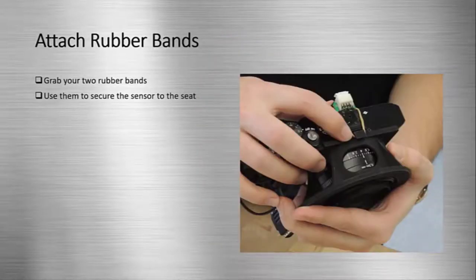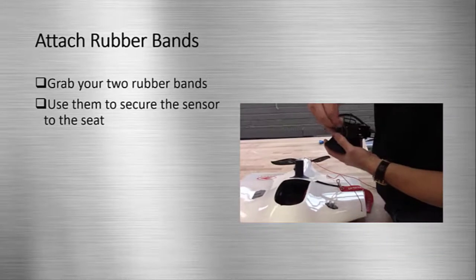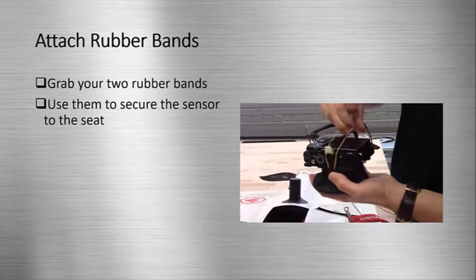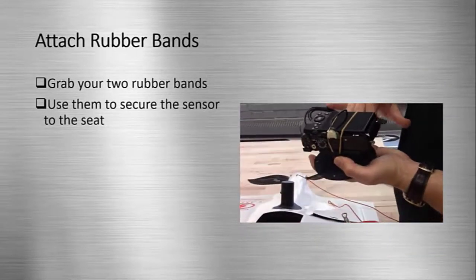Next, we will pick up our two rubber bands, attach them at the top center clip, and pull them down around the screen of the sensor to the bottom center clip.